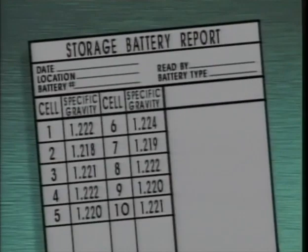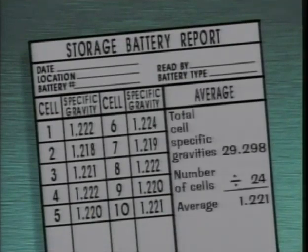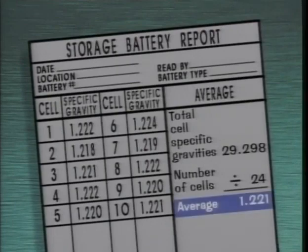Another way to evaluate cell specific gravities is to determine the average cell specific gravity. Each cell specific gravity is then compared to the average. According to IEEE Standard 450, if any cells fall below the average by .010 or more, the battery should be put on an equalizing charge.